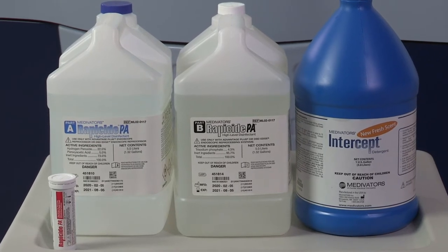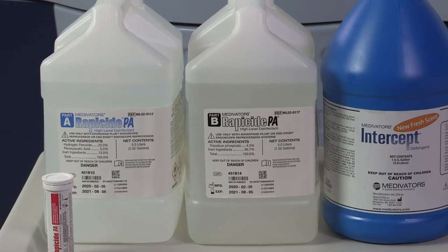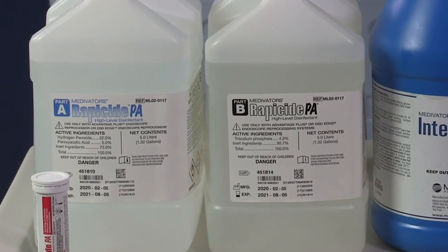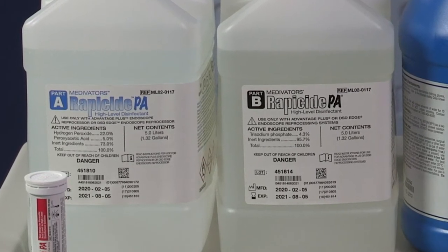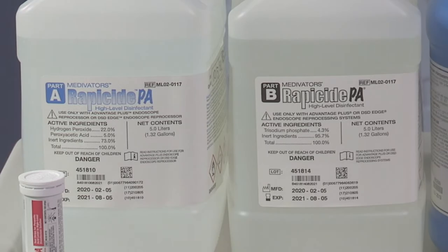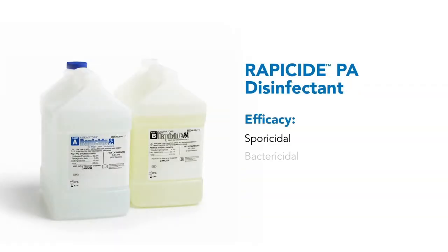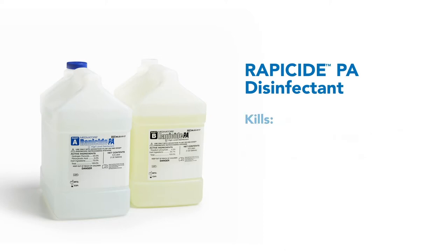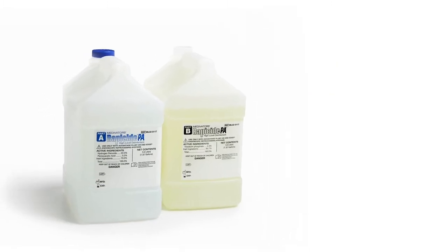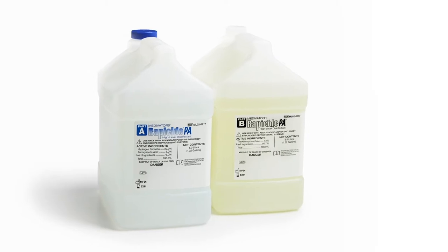The Advantage Plus reprocessor uses Wrap-Aside PA disinfectant that comes in two parts, A and B. It is a single-use peracetic acid-based solution with proven materials compatibility. High-level disinfection is achieved with an exposure time of only five minutes at a minimum of 30 degrees Celsius, when the concentration is equal to or greater than 850 parts per million. Wrap-Aside PA disinfectant has sporicidal, bactericidal, fungicidal, tuberculocidal, and viricidal efficacy, effectively killing TB, hepatitis viruses, poliovirus, Clostridium difficile, VRE, MRSA, CRE, and more. It is environmentally responsible, eventually breaking down into water and vinegar once it mixes with wastewater.